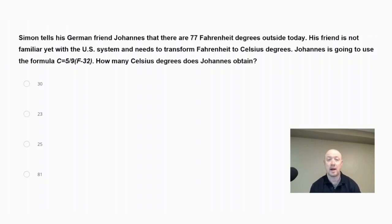Simon tells his German friend Johannes that there are 77 Fahrenheit degrees outside today. His friend is not familiar yet with the U.S. system and needs to transform Fahrenheit to Celsius degrees. Johannes is going to use the formula C equals 5 ninths times the quantity F minus 32. How many Celsius degrees does Johannes obtain?